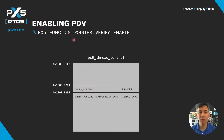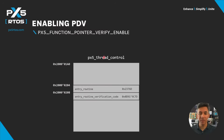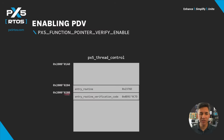When you define px5_function_pointer_verify_enable, all function pointers will be verified before use against the verification code established when they were set up. In this example, the start routine is at flash memory address 0x2376D. The internal PX5 thread control structure, which contains the function pointers and other information, starts at RAM address 0x2001A0.